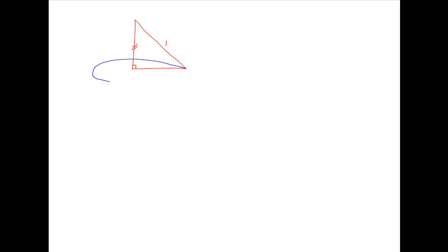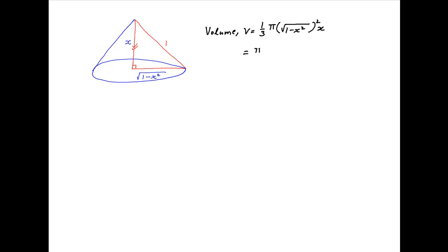We are given that the lateral length of the cone is equal to 1. Let's assume that the height of the cone is equal to x, and therefore using Pythagoras' theorem, the radius of the base is equal to the square root of 1 minus x squared. Now the volume of a cone is equal to π/3 times the square of the radius times the height, which equals π/3 times (1 minus x²) times x, simplifying to π/3 times (x minus x³).